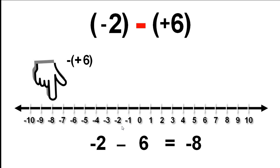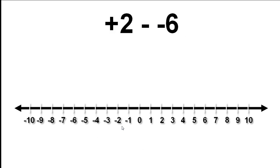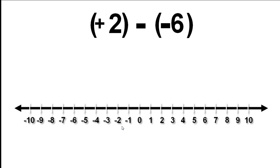Next, we are going to look at subtracting a negative number. Let's look at positive 2 subtract negative 6. Make it clearer by putting brackets around the numbers.